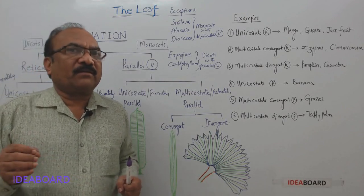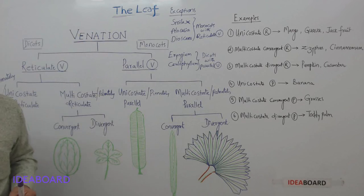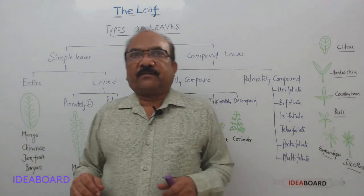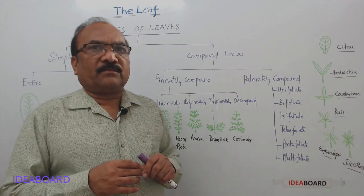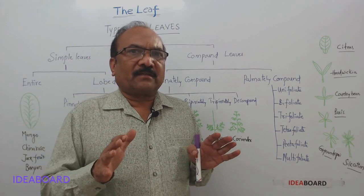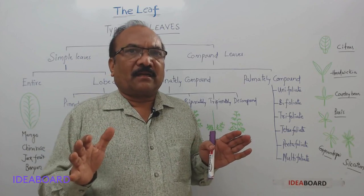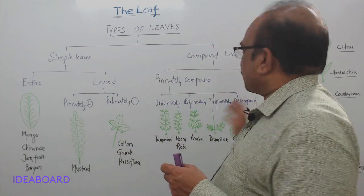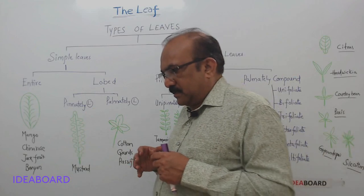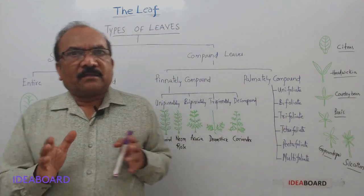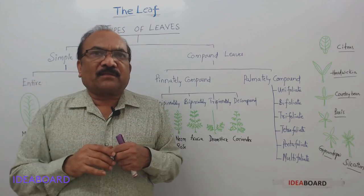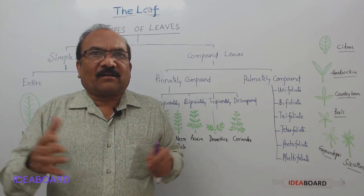Now we will discuss the different types of leaves. Leaves come across with different shapes, and leaves are classified based on whether the lamina — the upper expanded portion — is dissected or not. This dissection can also be called incision.